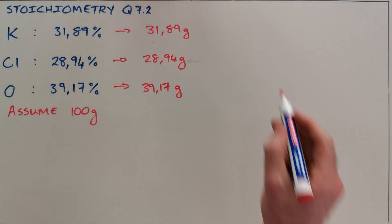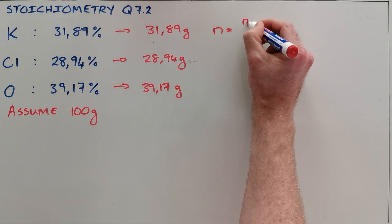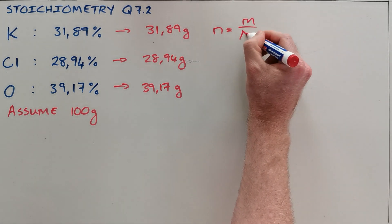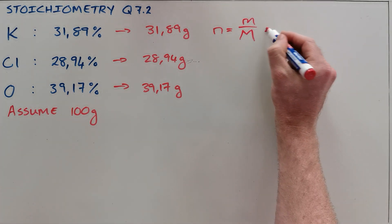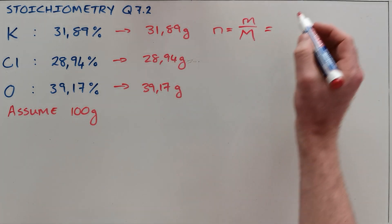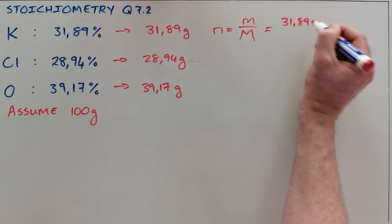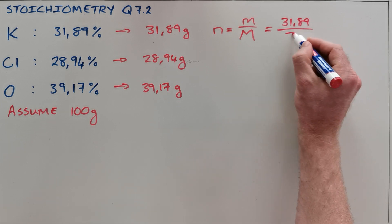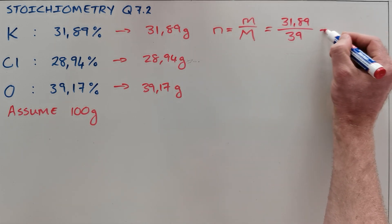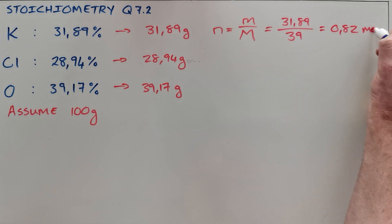Once you've got this, you can use your formula to convert from a mass into a number of moles. The number of moles of potassium equals the mass of potassium, 31.89, divided by the molar mass of potassium found on the periodic table, which is 39. That gives us 0.82 moles of potassium.